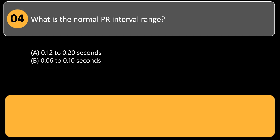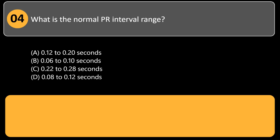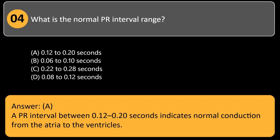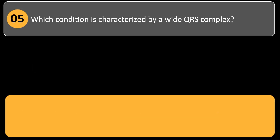What is the normal PR interval range? A. 0.12 to 0.20 seconds. B. 0.06 to 0.10 seconds. C. 0.22 to 0.28 seconds. D. 0.08 to 0.12 seconds. Answer: A. A PR interval between 0.12 to 0.20 seconds indicates normal conduction from the atria to the ventricles.